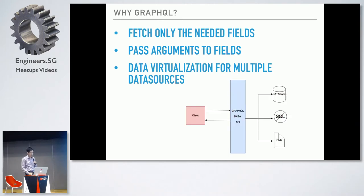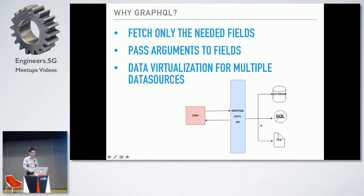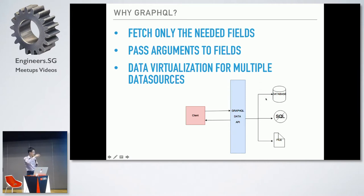The third reason is that GraphQL becomes a virtualization layer for multiple data sources. As mentioned, we can have multiple data sources — a database, NoSQL, different file systems. The GraphQL data API becomes an abstraction layer to virtualize those multiple data sources. The client does not need to know what is behind the backend. They just need to know the API is available — they can retrieve employee, they can retrieve department — but underlying, it can be multiple data sources.